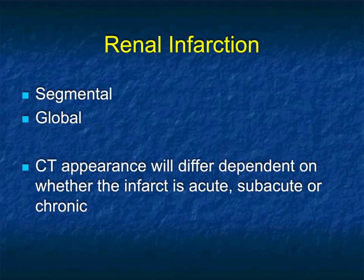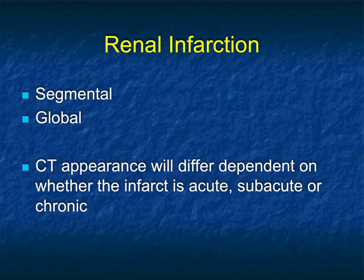Thinking about the kidneys from a global perspective, let's consider renal infarcts. Renal infarcts can be due to a range of causes and are seen more commonly now because of IV drug abuse, sepsis, and valve replacements. Infarcts can be segmental or global — segmental is more common. The CT appearance depends on whether the infarct is acute, subacute, or chronic.